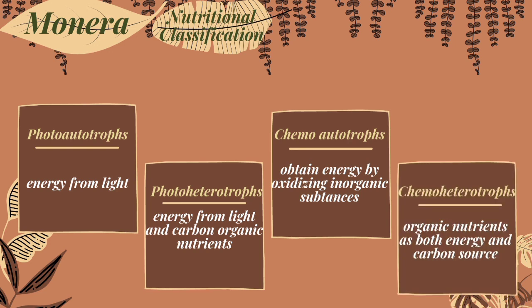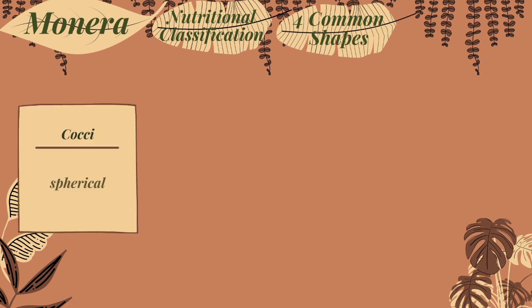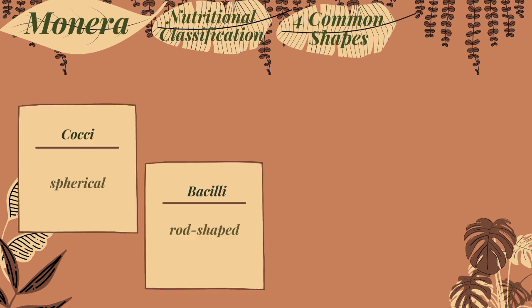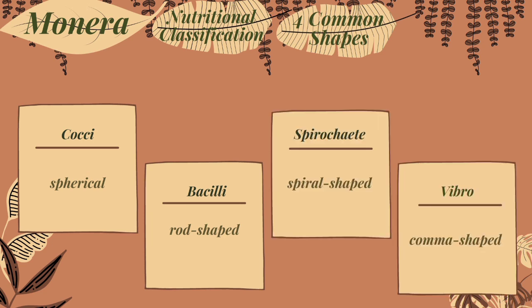Chemo-autotrophs obtain energy by oxidizing inorganic substances. And chemo-heterotrophs use organic nutrients as both energy and carbon source. Monera or prokaryotes have four most common shapes: cocci, the spherical; bacilli, the rod shape; spirochetes, the spiral shape; and vibrio, the comma shape.